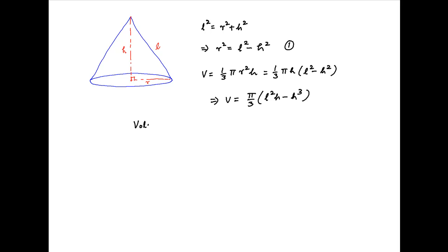The volume of the cone is maximum or minimum when the first derivative of V with respect to H is equal to 0.